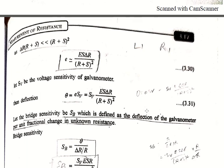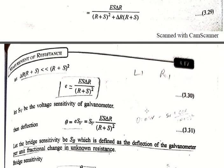If we assume the disturbance is very small, then δr × (R + S) is very much less than (R + S)², so we can neglect this term. The simplified EMF across the galvanometer becomes: e = E × S × δr / (R + S)².